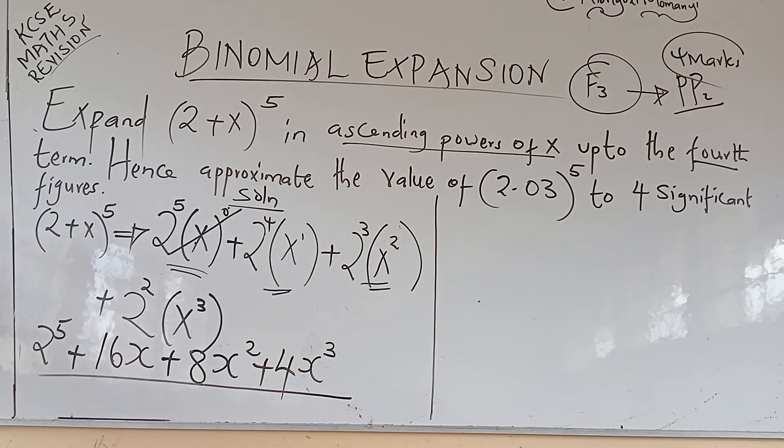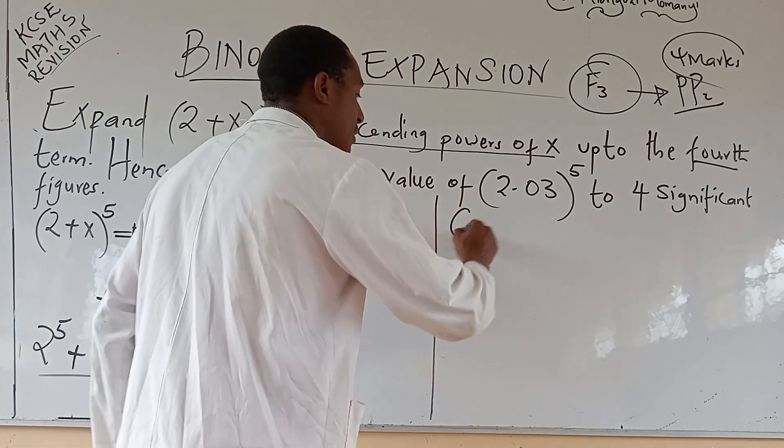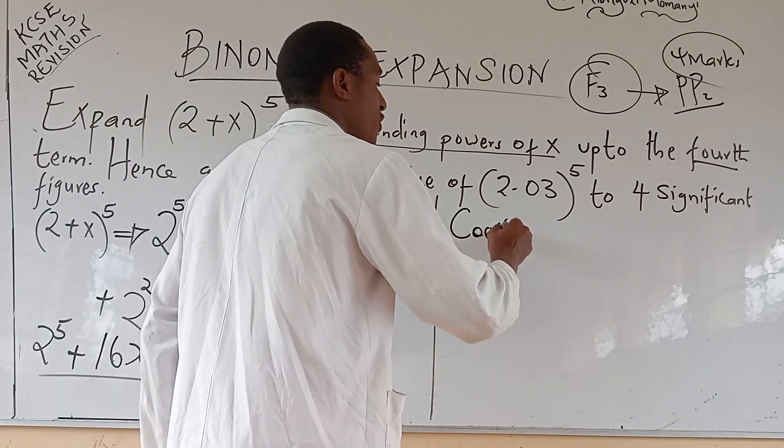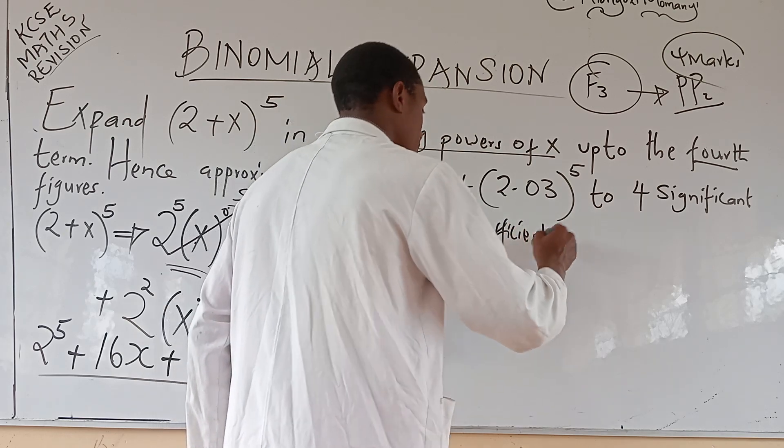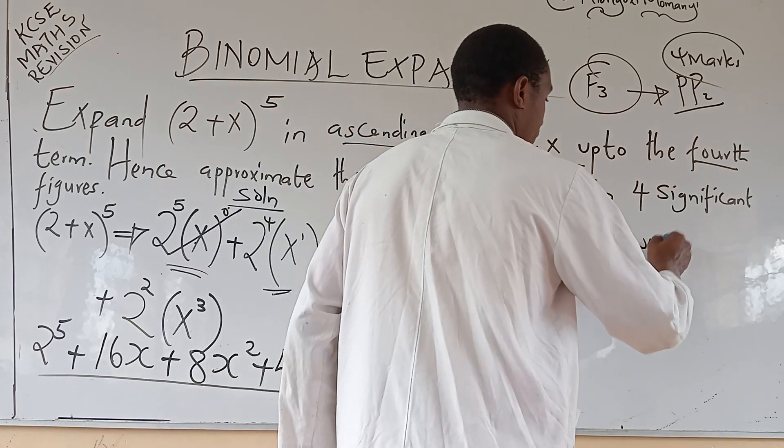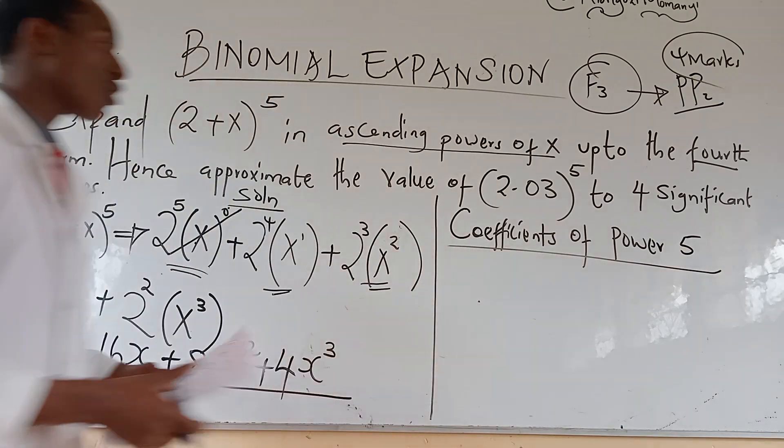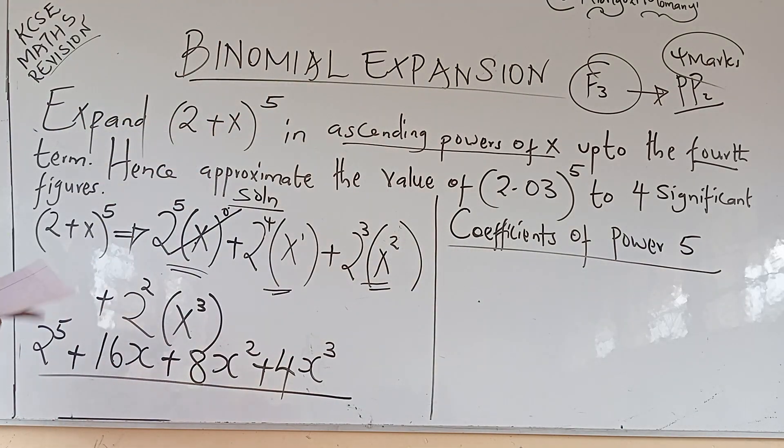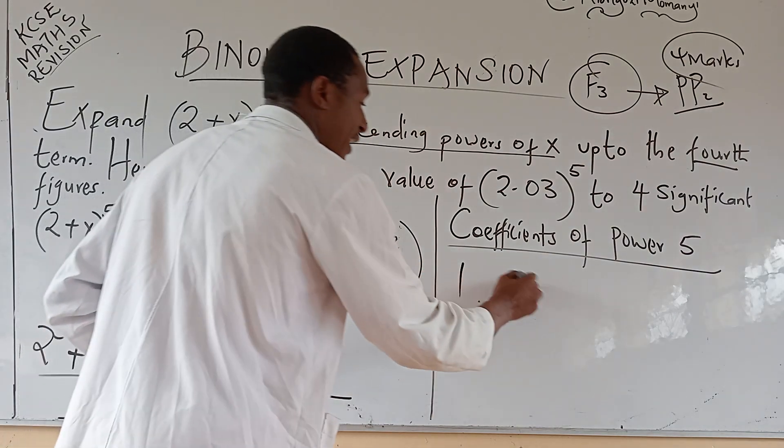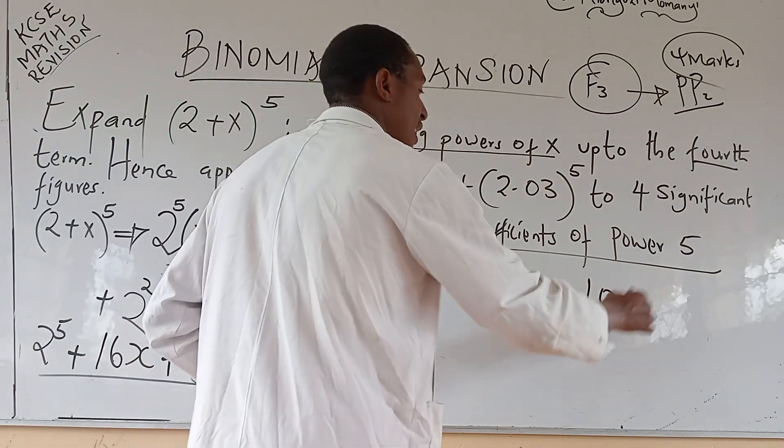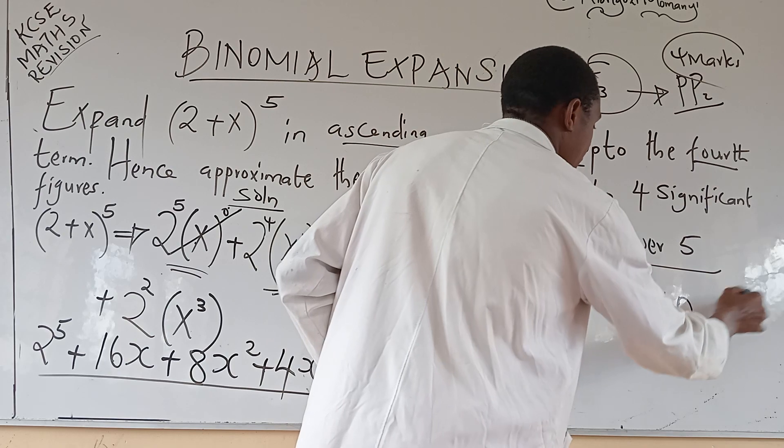But now, it is not complete before we put the coefficients. So you go to your table, or even your calculator, look for the coefficients. Coefficient of power 5. Coefficients are: we have 1, 5, 10, another 10, 5, and 1.